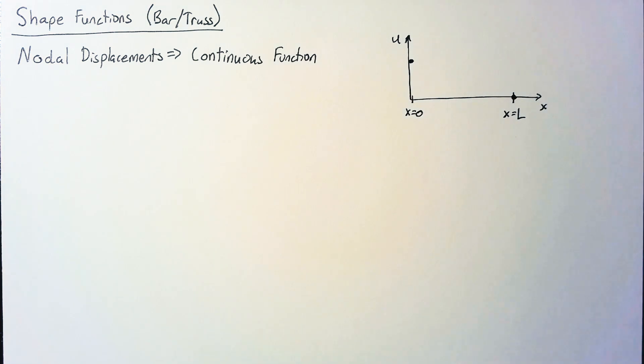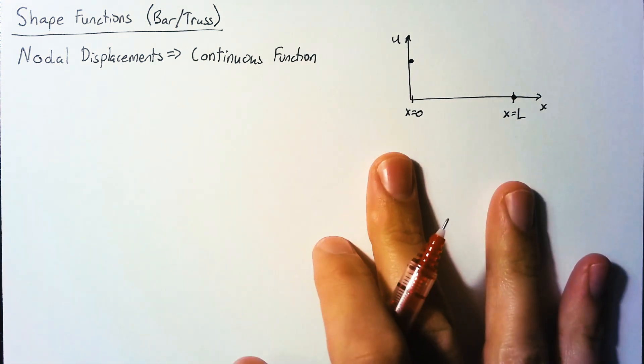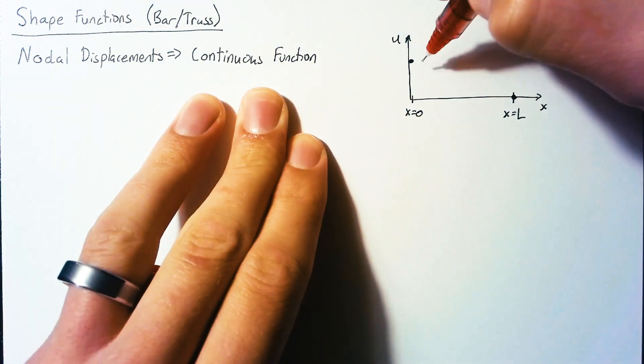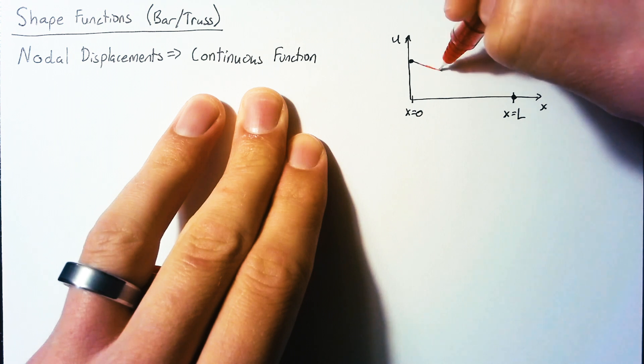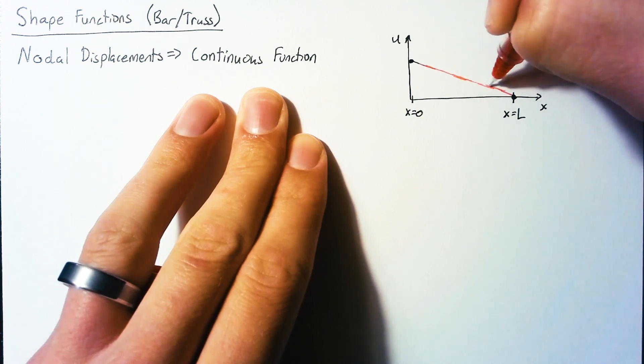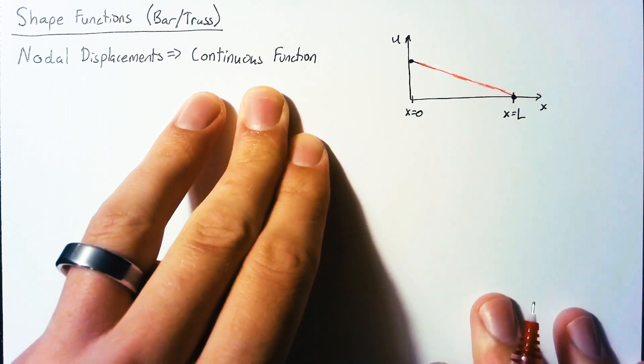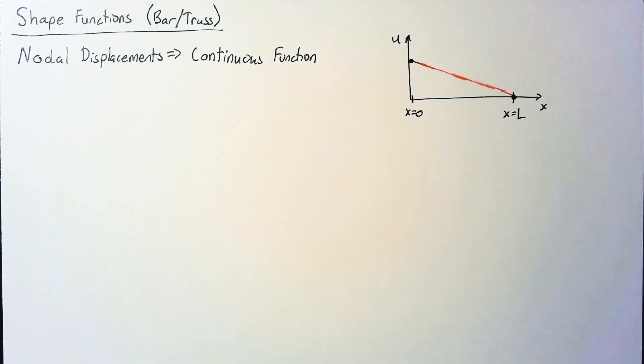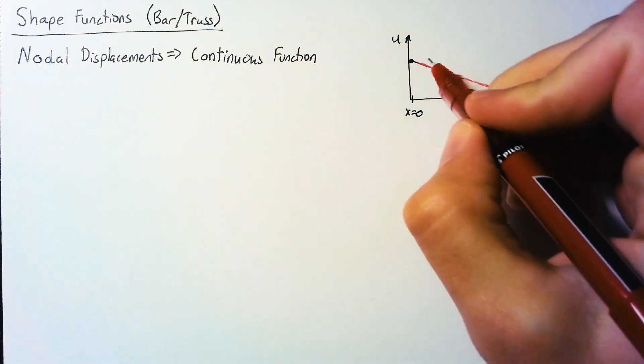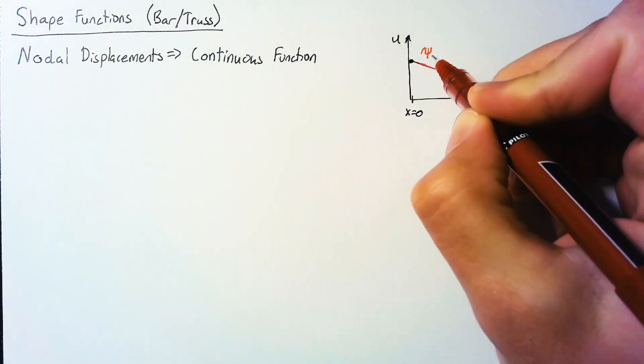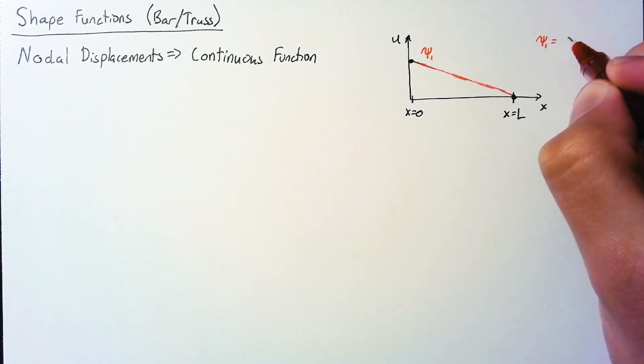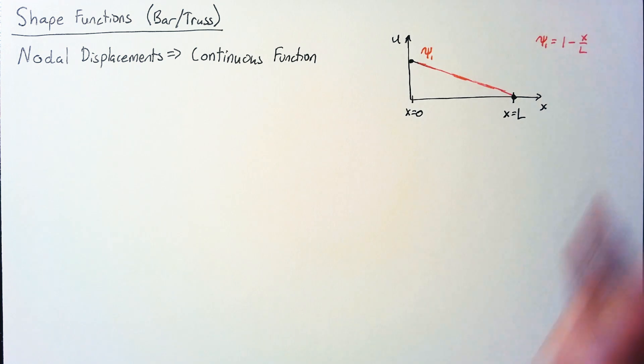In that case, the simplest thing we can do to determine what our continuous function is in between these two nodes is simply to draw a line between them. You can also see this as linear interpolation. This is the most simplistic shape function we can use. I'm going to call this psi 1, and we can define psi 1 as 1 minus x over l.